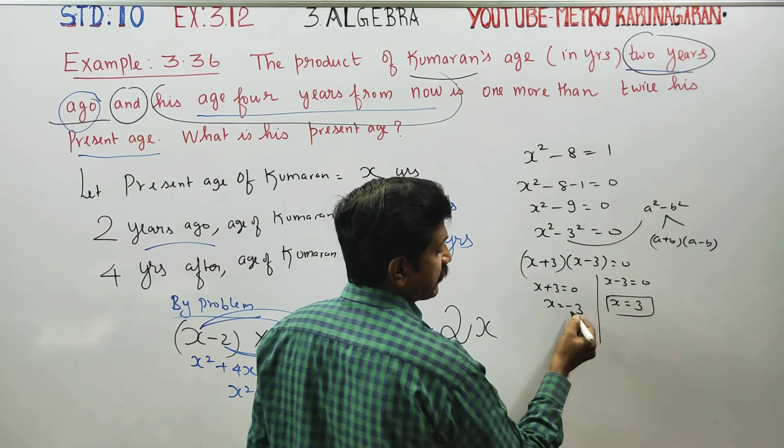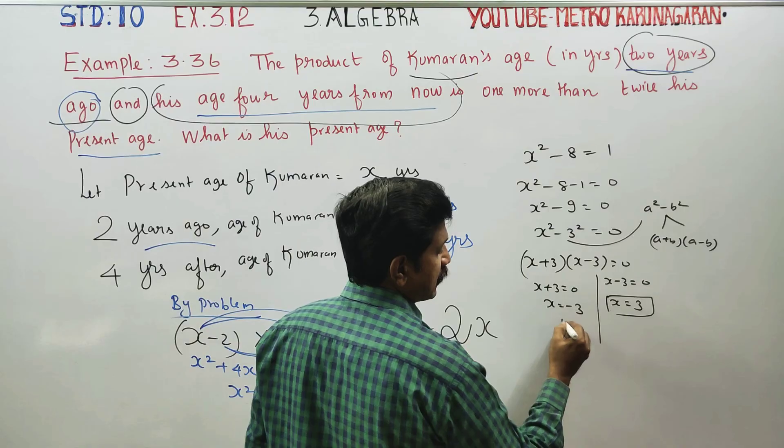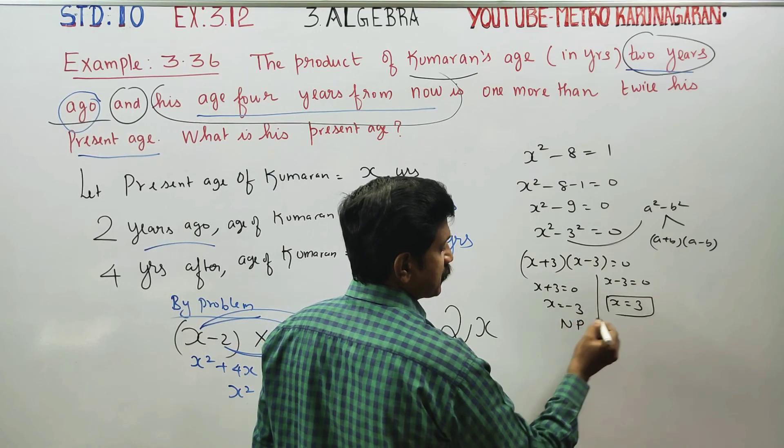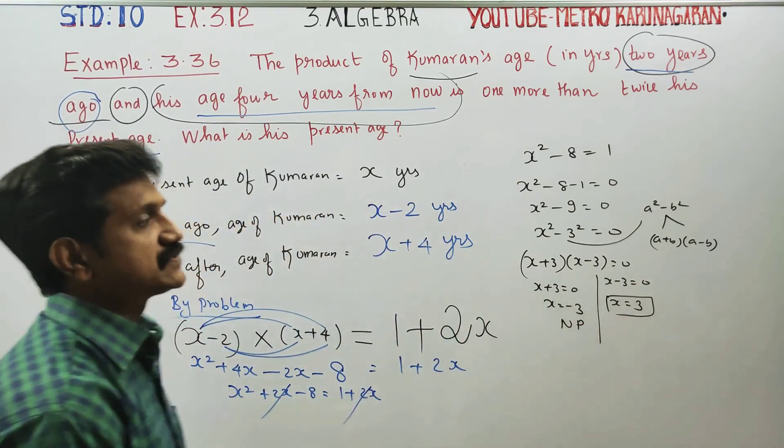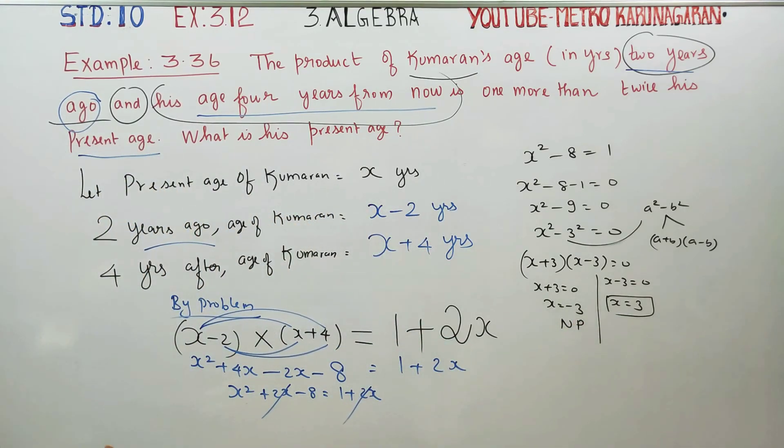Since a negative age is not possible, x equals 3 is the valid answer.